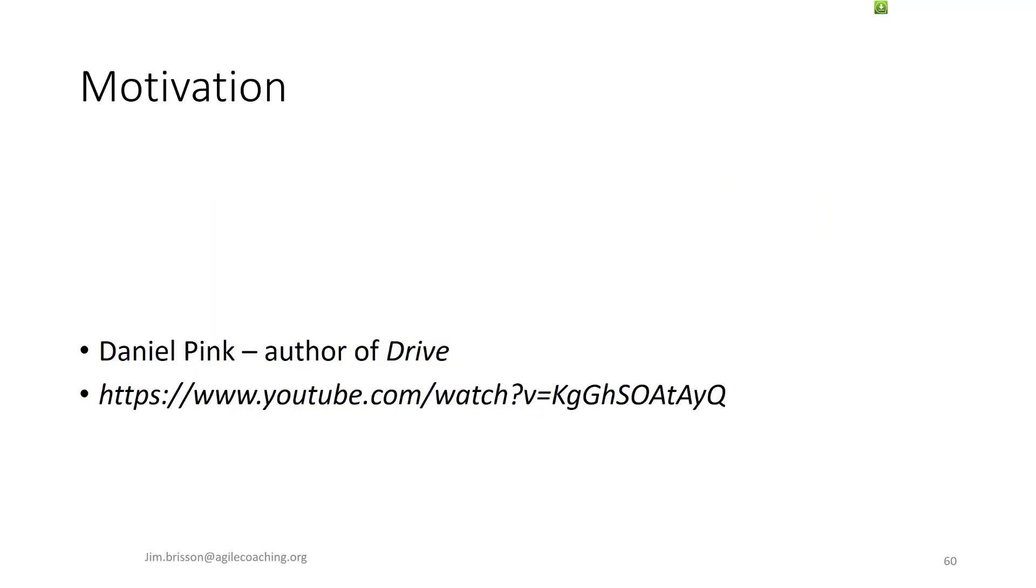Now, Dan Pink has a great YouTube video on motivation. I'll put a link in the comments for this video. Now, assuming we have enough to meet our basic needs, he says that further motivation has three key elements. Autonomy, we want to have the control to be able to change our work processes for the better. Mastery, we naturally want to get better at work, hobbies, etc. I mean, why are you watching this video?